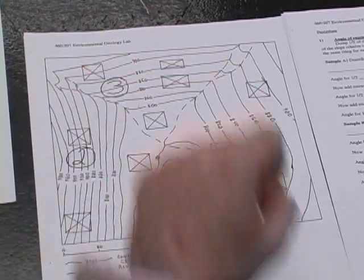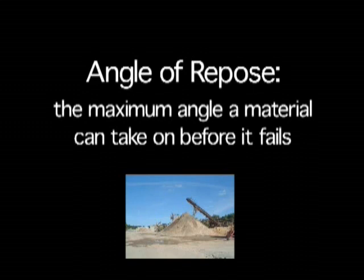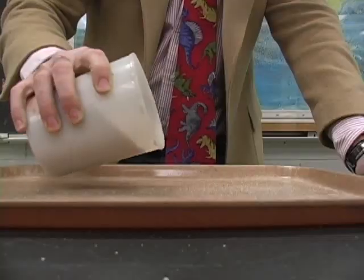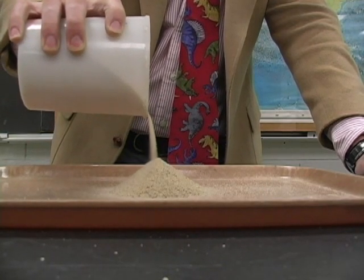Second, we're going to compare it to an area to see if we can predict whether slopes will be stable or not. The first concept is what is called angle of repose. The angle of repose is the maximum angle that a material can take on before it fails. So if you dump a pile of stuff onto the table, what angle would that hill be at maximum before it slops down the hill again?